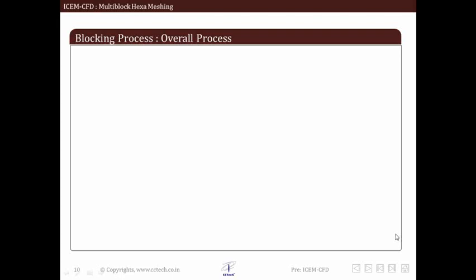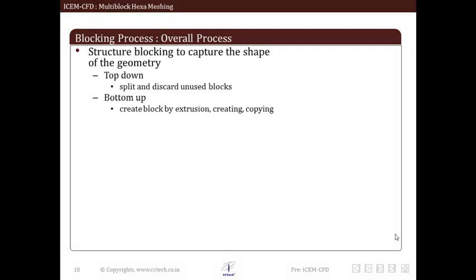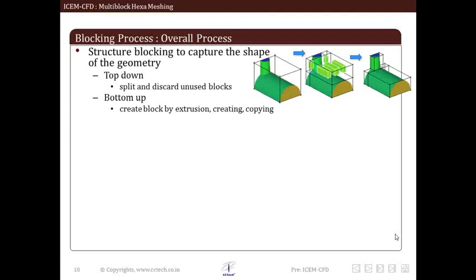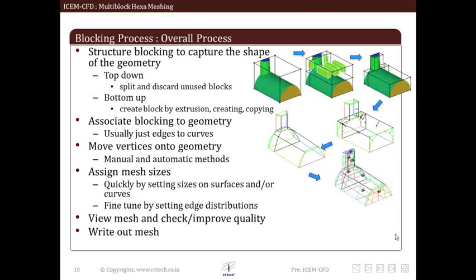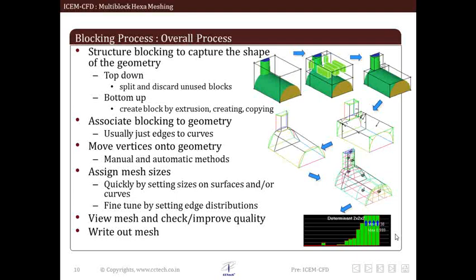Now let us get an overview of steps involved in the blocking process. In general, it follows these steps: First, we initialize the block. Then we decide the approach of blocking—that is, either top-down or bottom-up. Once blocking topology is ready, we associate vertices and edges to points and curves. Then we decide node distribution on edges of blocks—that is, define the mesh size. Next, we preview the mesh, check quality of mesh, and if needed, improve mesh. Once appropriate quality is achieved, we write out the output file which will be the input file for the solver. This is the overall process, and we should be familiar with it whenever we start any project or any meshing assignment in ICMCFD.